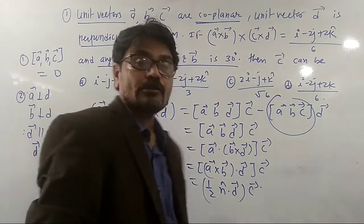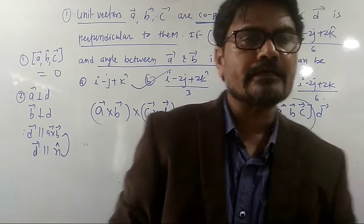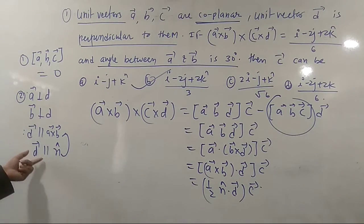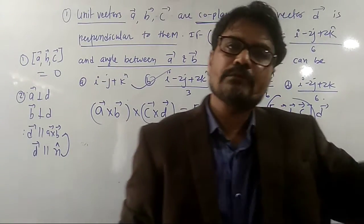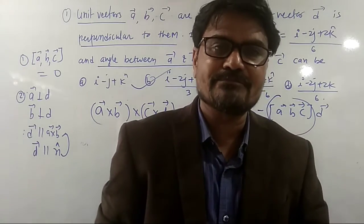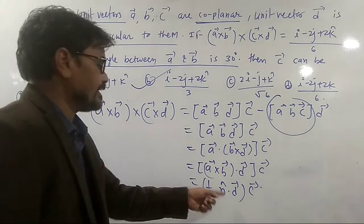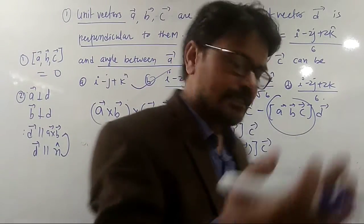Now, N or D dot product. N is a unit vector. D is again a unit vector. And N is parallel to D vector because this N is a unit vector along A cross B. And D is perpendicular to A, D is perpendicular to B. A cross B is already perpendicular to A and B. That means D is parallel to A cross B. That means D and N are parallel to each other. That means the angle between them is 0.